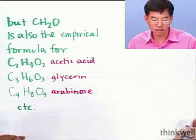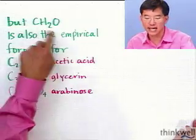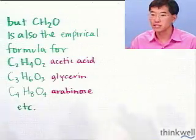Any molecule that has a molecular formula CnH2nOn is going to give exactly the same empirical formula. So we know more, but we still don't know what our unknown is.